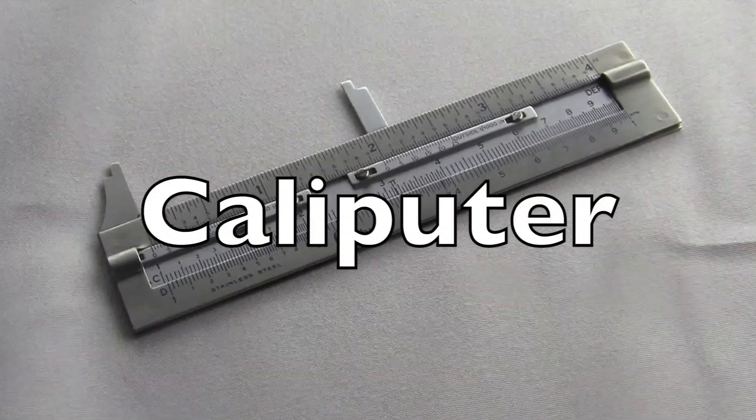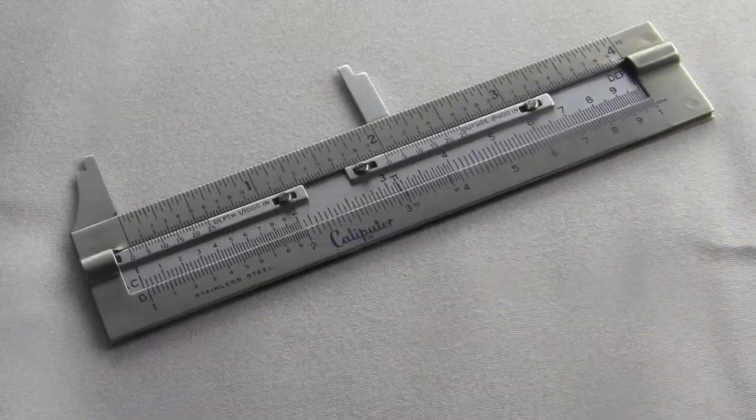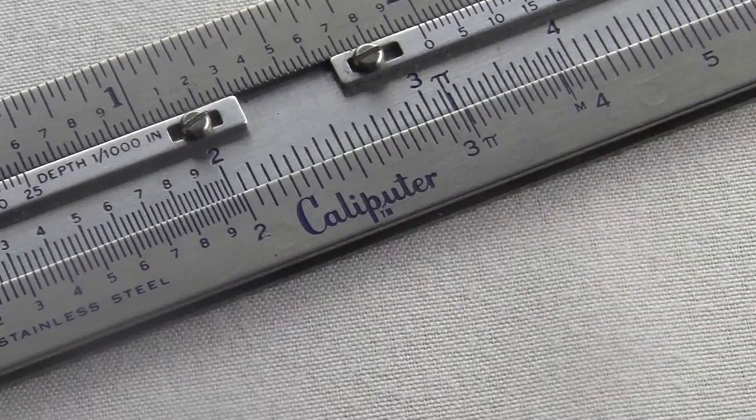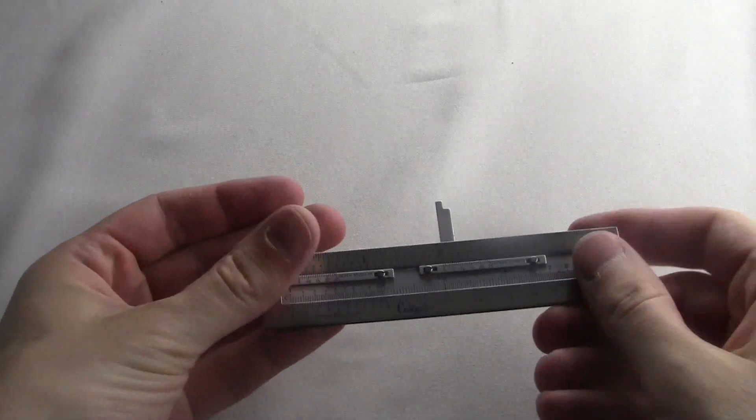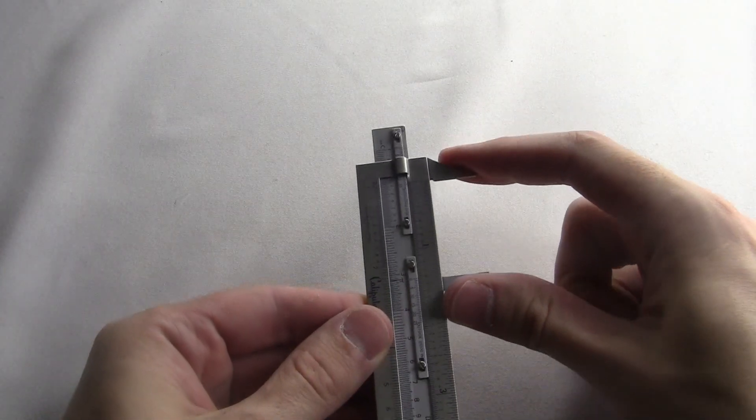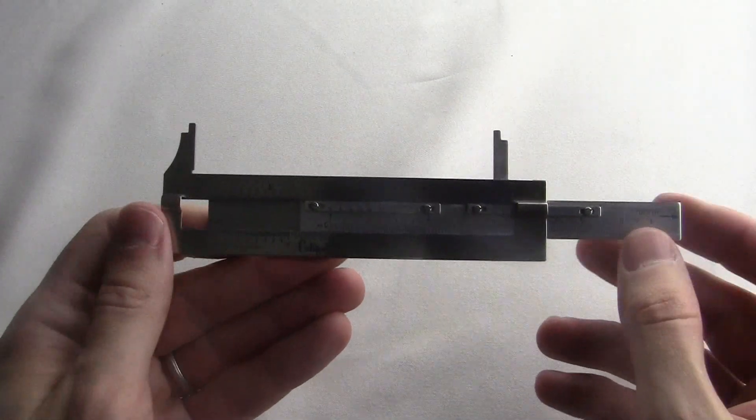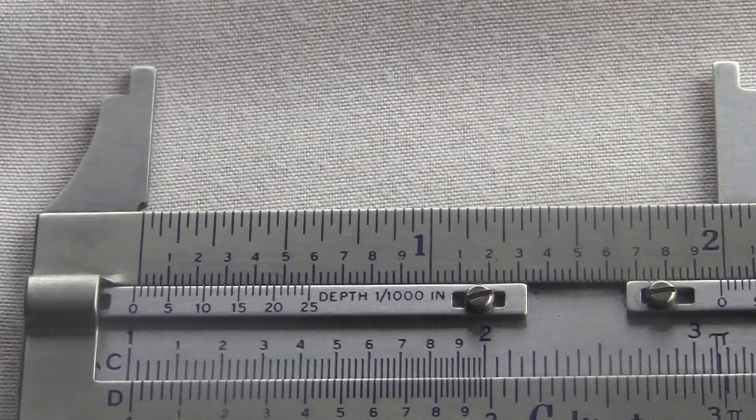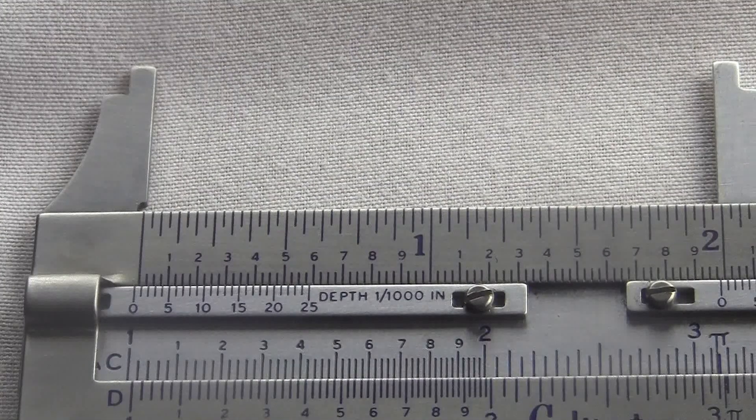This is the Caliputre from the 1960s. It's a little metal instrument that does lots of stuff. They made these in English and metric. I have the English one. It's 4 inches long, and it's marked on the top here. It's got ordinary ruler markings on the top, but below that the inches are also divided into tenths.